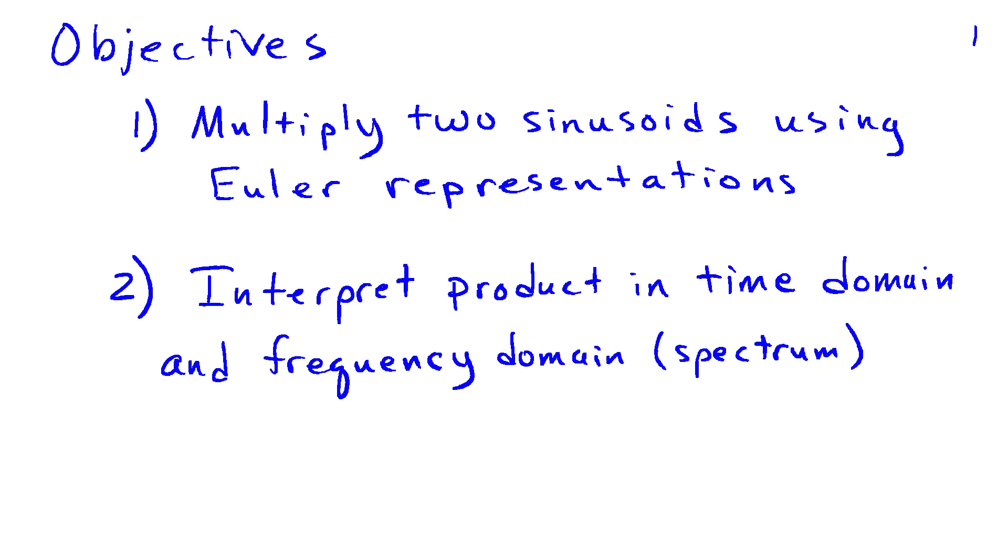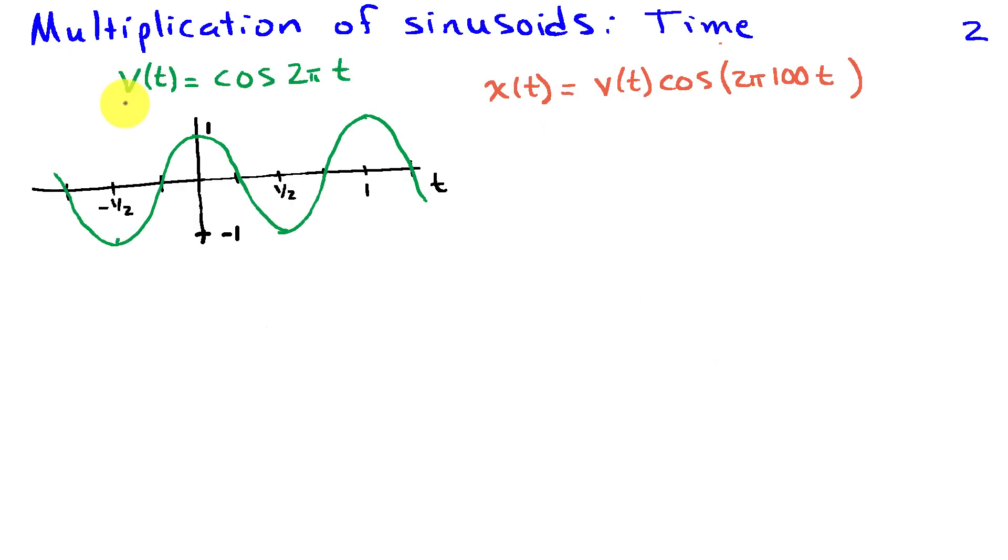We'll interpret this product of two sinusoids in the time domain and the frequency domain in terms of the spectrum. We're going to begin with an example where we have a sinusoid v of t, and for convenience we've chosen the frequency to be 1 Hz. Then we're going to multiply v of t times another sinusoid, and here I've chosen the frequency to be 100 Hz. The product we're going to call x of t.